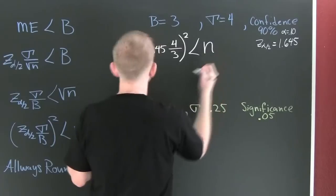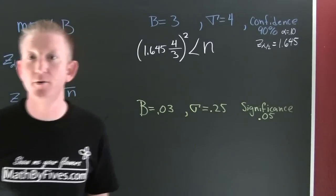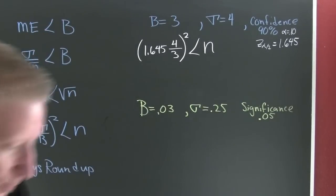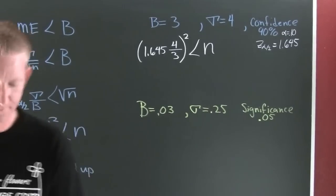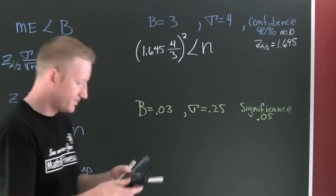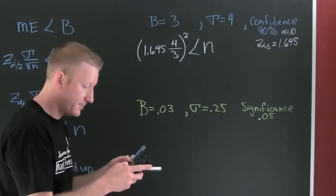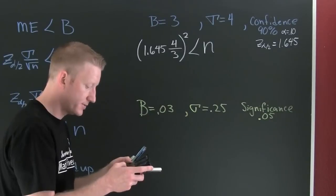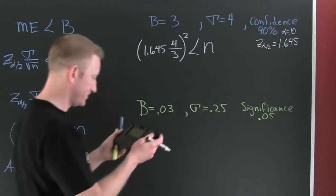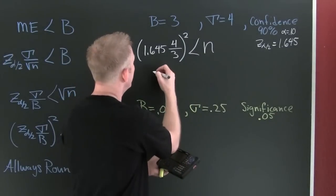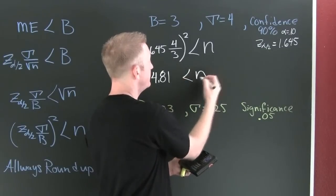I got a calculator around here somewhere. My studio's gotten a little... there we go. 1.645 times 4 divided by 3, close it, square it. Wow, we don't really need to sample that many, is that true? It appears to me that 4.81 is smaller than n.